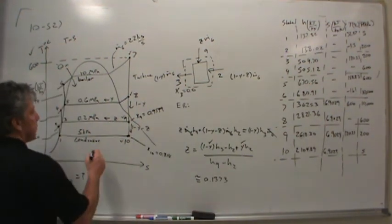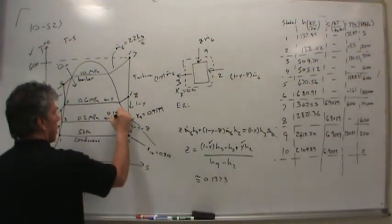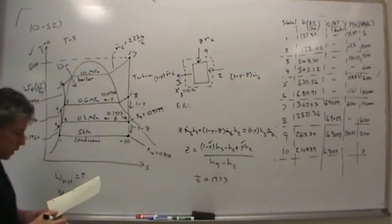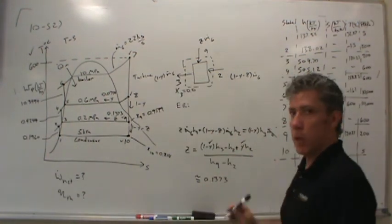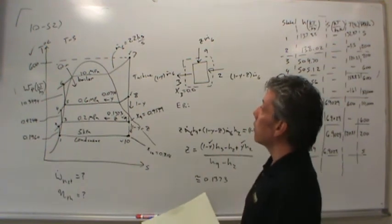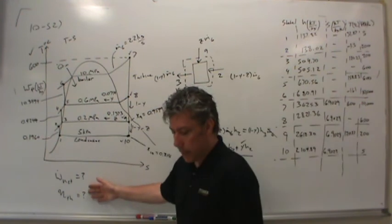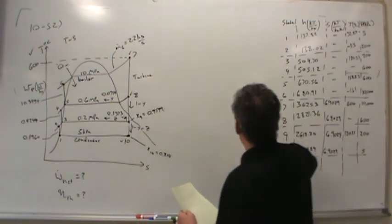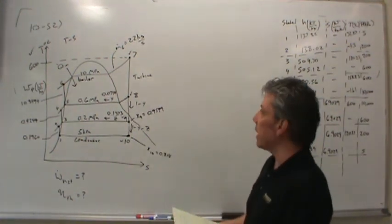So there's the mass fraction: z is 0.1373 and y was 0.0714. The wrinkle in this problem is that knowing enthalpies alone wasn't quite enough — we needed a little bit more information. Now we've solved everything; there's nothing else to know except to answer the questions. We know all the mass fractions, all the enthalpies, and all the qualities.